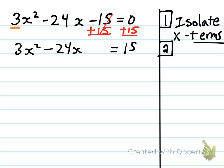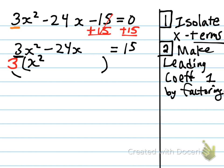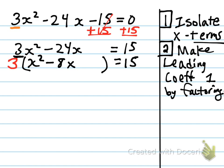Step 2. This part was not necessary in the last video because our leading coefficient was 1. So if necessary, make the leading coefficient 1 by factoring. I'm going to take this 3, which is our leading coefficient, out of the problem by factoring out a 3. If I factor a 3 out, I'll be left with x squared minus 8x. The way to check factoring is just to distribute back in — 3 times x squared is 3x squared, 24 divided by 3 is 8x — and the other side is still 15. So the equation is exactly the same. I haven't changed anything.